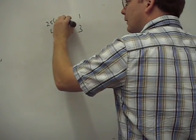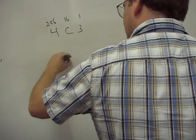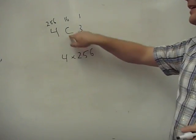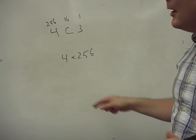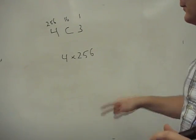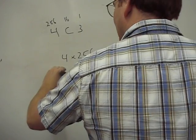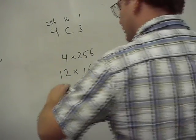And now we go through and we have 4 times 256. We have c times 16. Remember that a is 10, b is 11, so c is 12. So c times 16 is 12 times 16 and then 3 times 1.